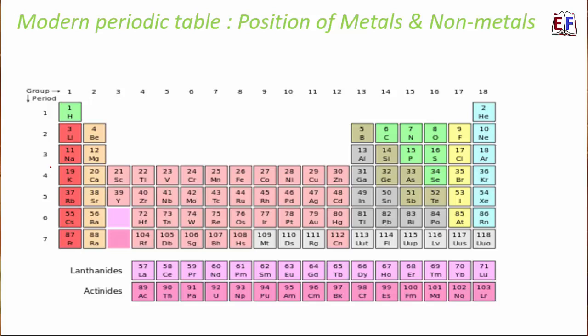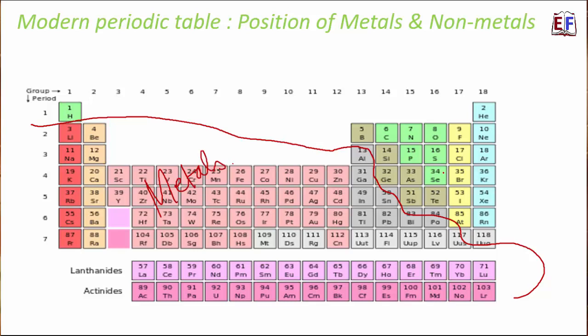Regarding the position of metals and non-metals on the periodic table: metals are far more numerous than non-metals. Most of the left and central portion of the periodic table consists of metals, while non-metals occupy fewer positions. Somewhere in between metals and non-metals, there are a few metalloids. In the next video, we will learn about the trends in the properties of elements along groups and periods.